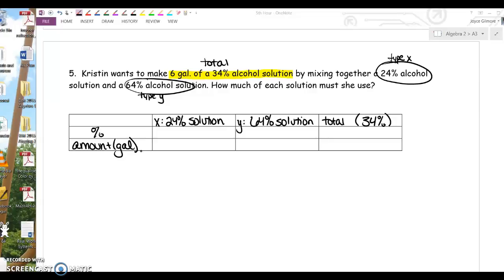The amount is the easy one. The amount of the 24% solution plus the amount of the 64% solution is going to equal a total of how many gallons of solution? Six gallons.